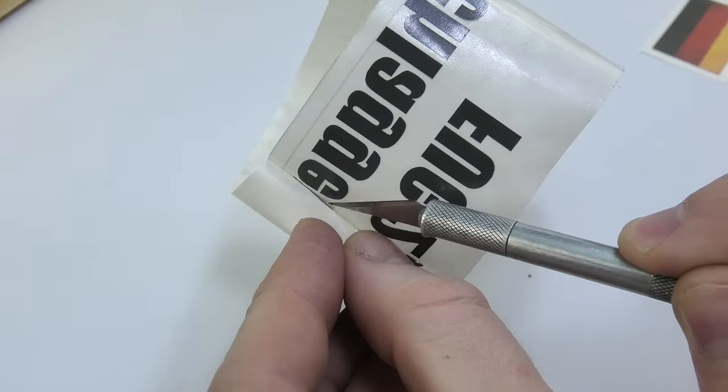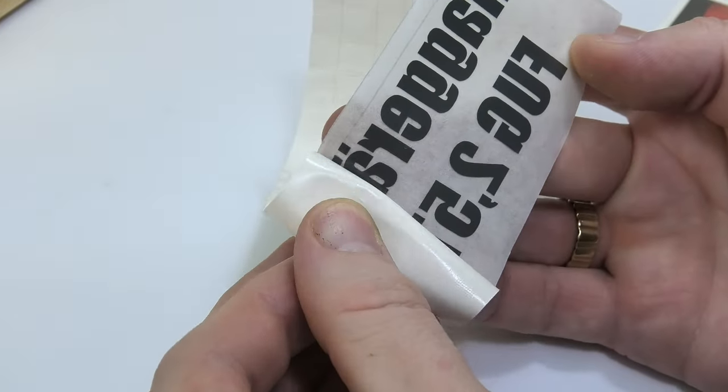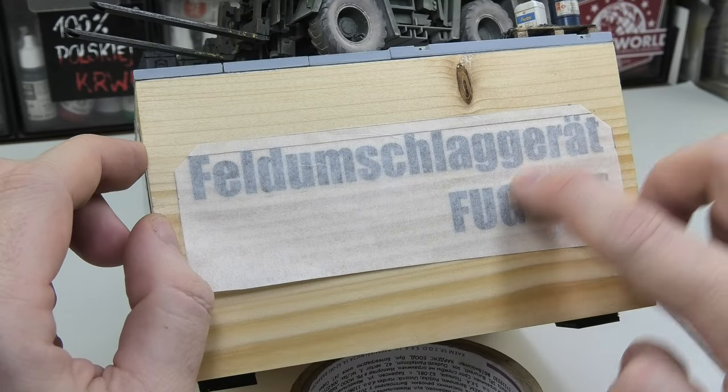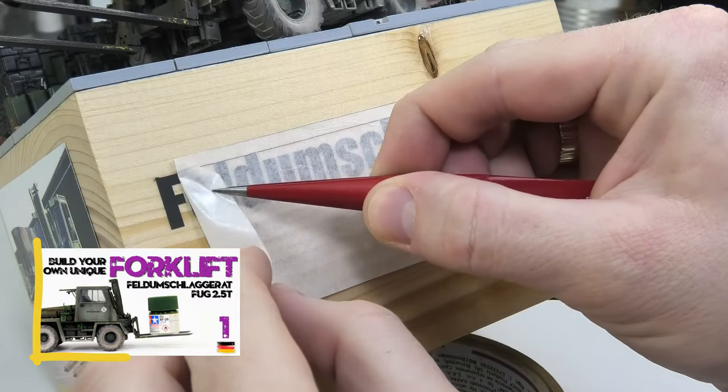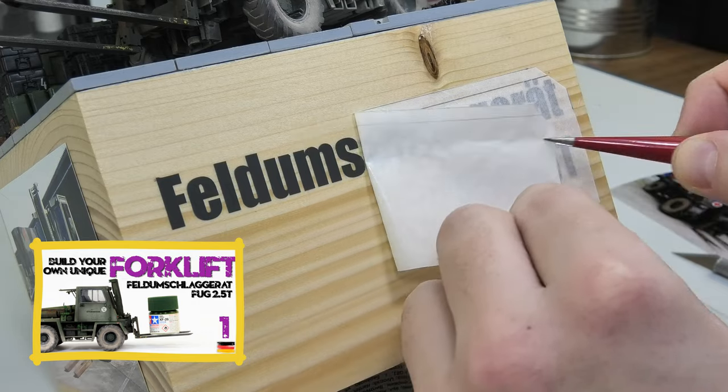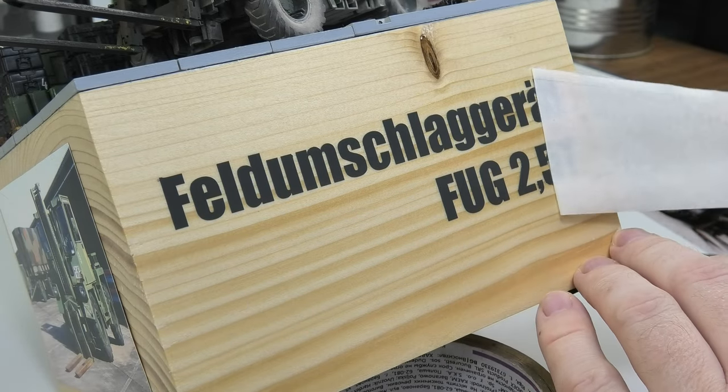On the front wall I stuck a specially prepared inscription for this project and the sticker with the German flag. I copied this from my idea shown on the thumbnails for the videos of this series. It looks mega and I'm very happy with the effect.